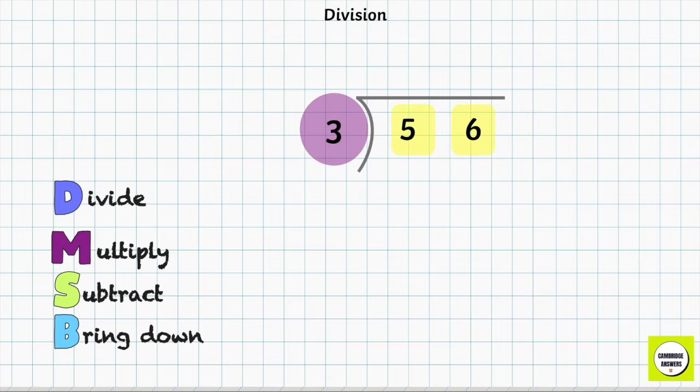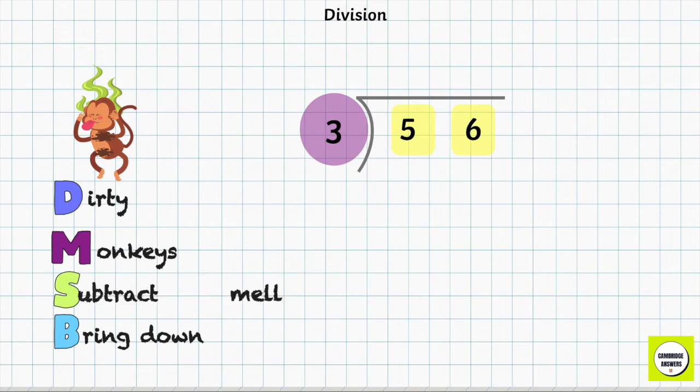We can use the acronym D, M, S, B to help us divide. An easy way to remember this is Dirty Monkeys Smell Bad.